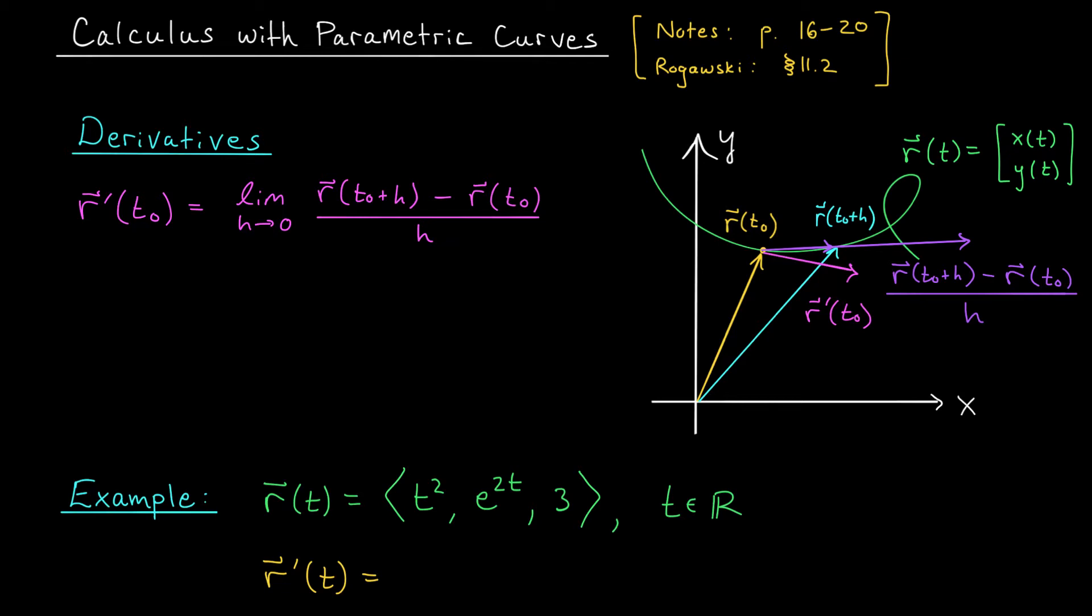Now, we're often used to thinking of derivatives as rates of change. The derivative is supposed to tell us how sensitive our output is to tiny changes in our input. In this case, we have multiple outputs, but the idea is still the same. Our derivative, r prime of t₀, tells us how sensitive our functions are, x(t) and y(t), to tiny changes in our parameter. Maybe then it won't be too surprising to learn that the components of this derivative vector actually turn out to be x'(t₀) and y'(t₀). These are the rates of change of x and y with respect to t at this particular point in time.